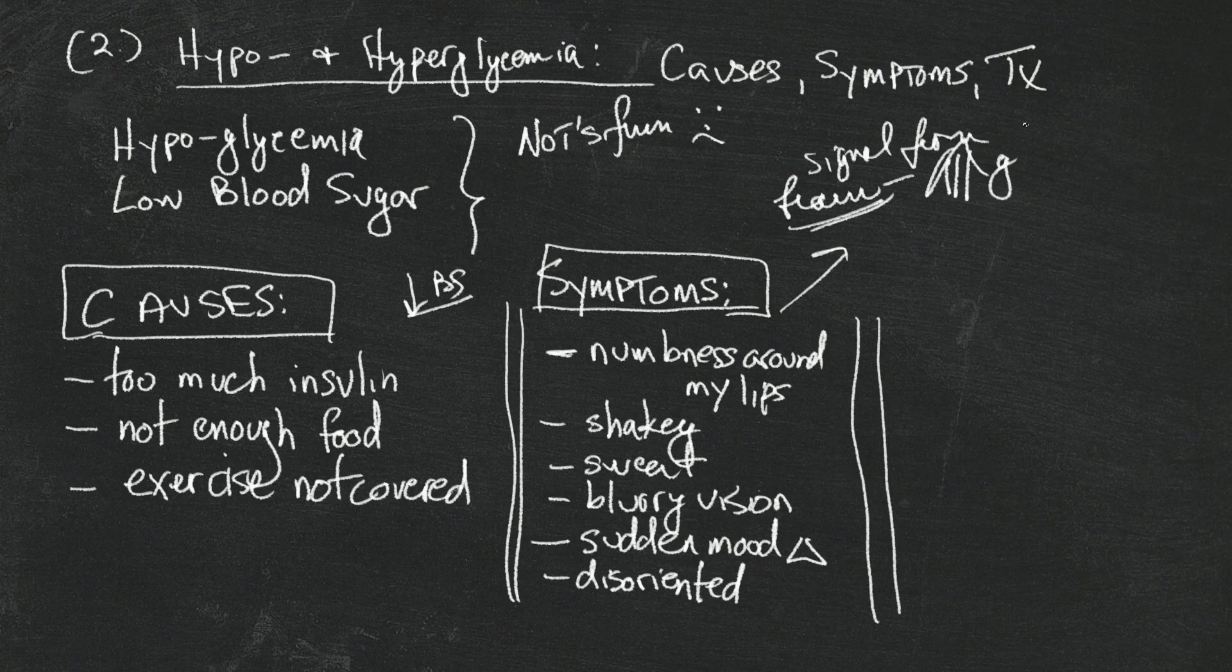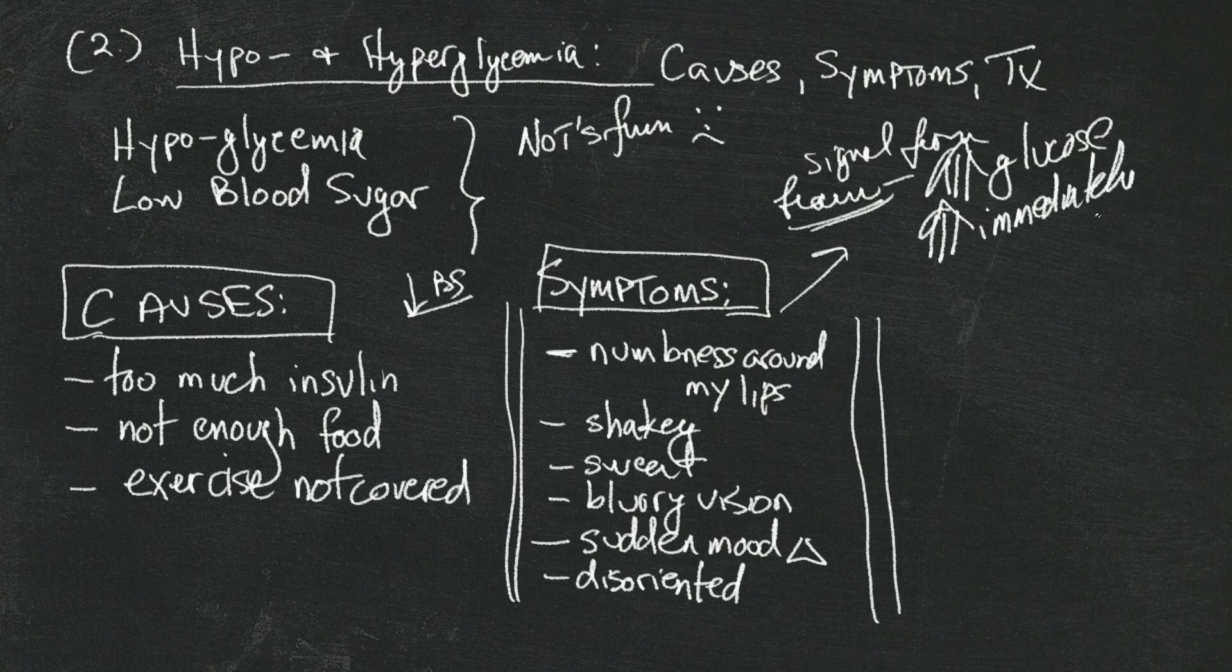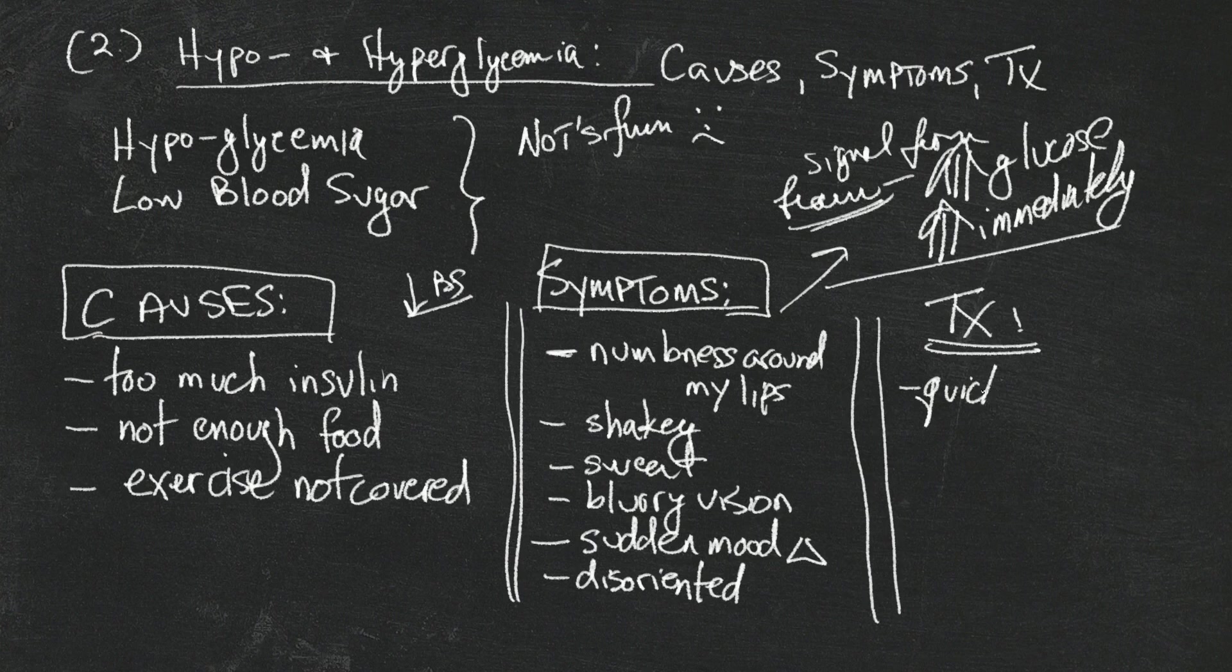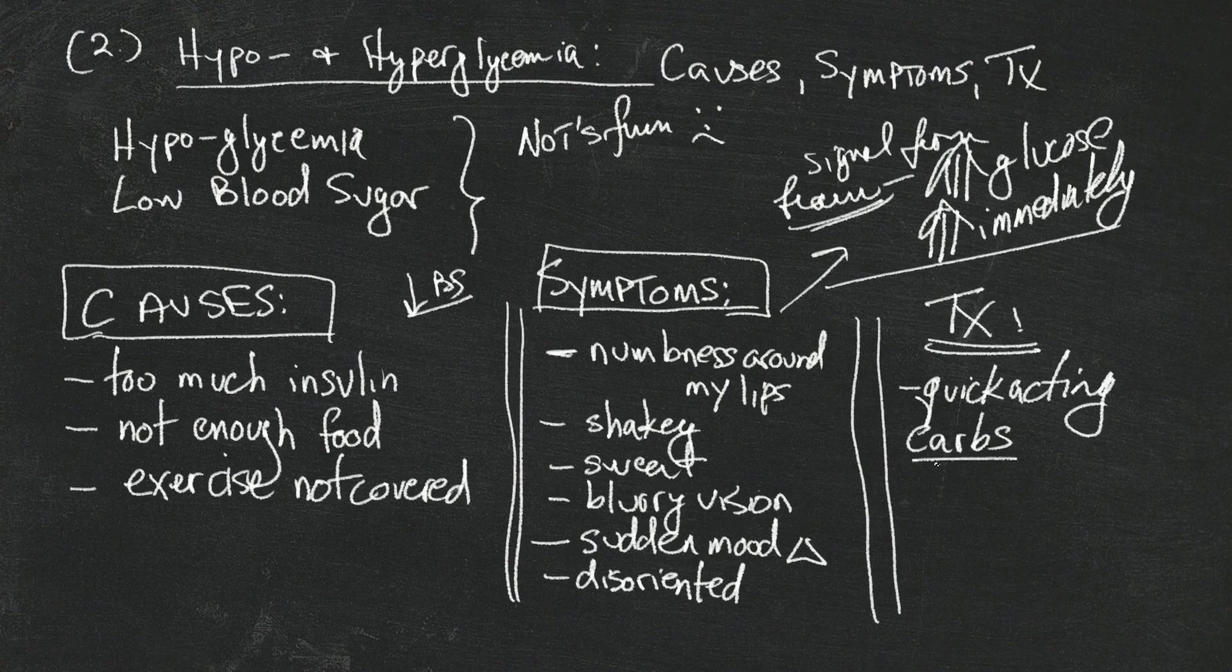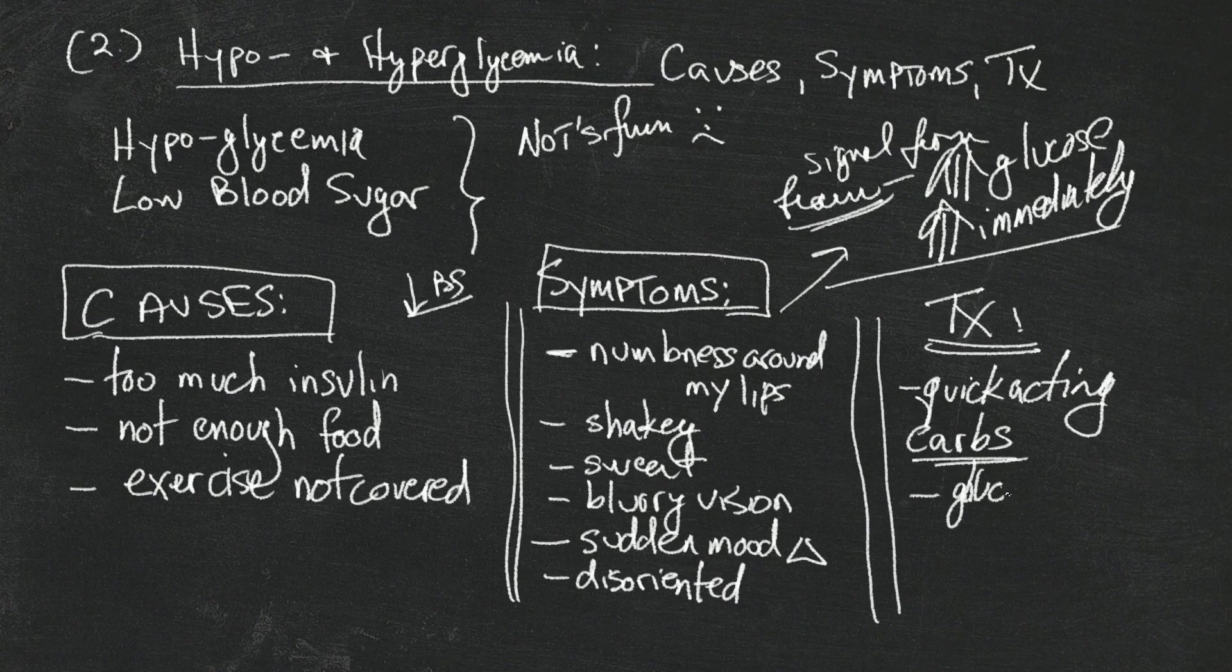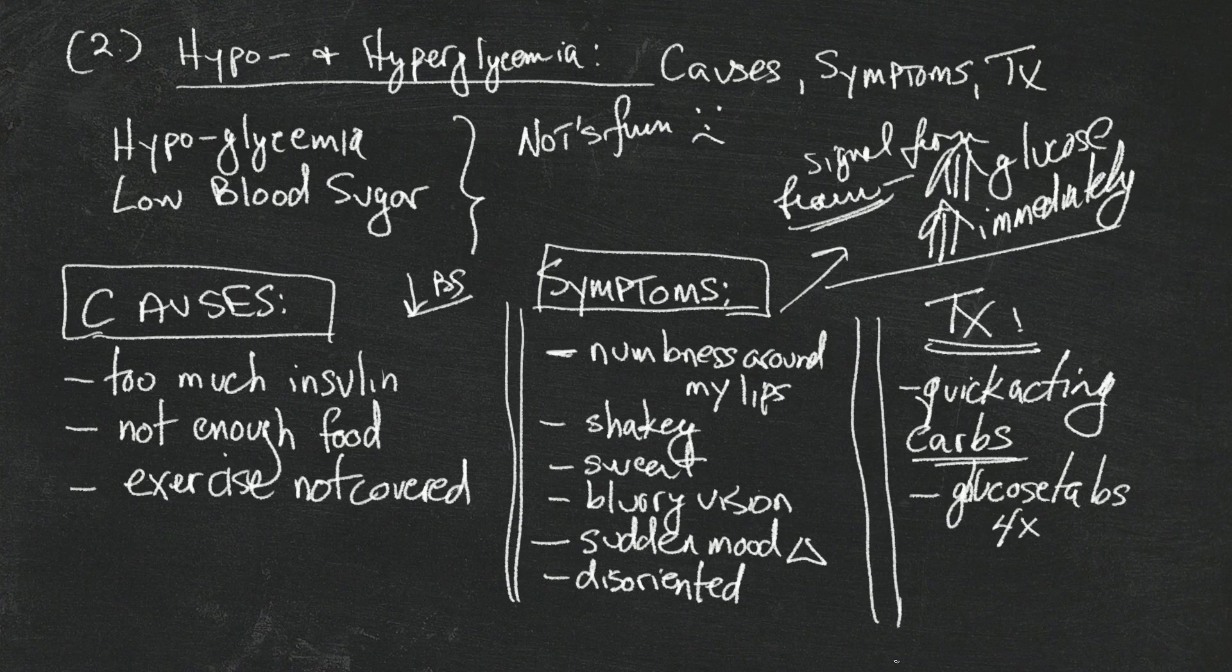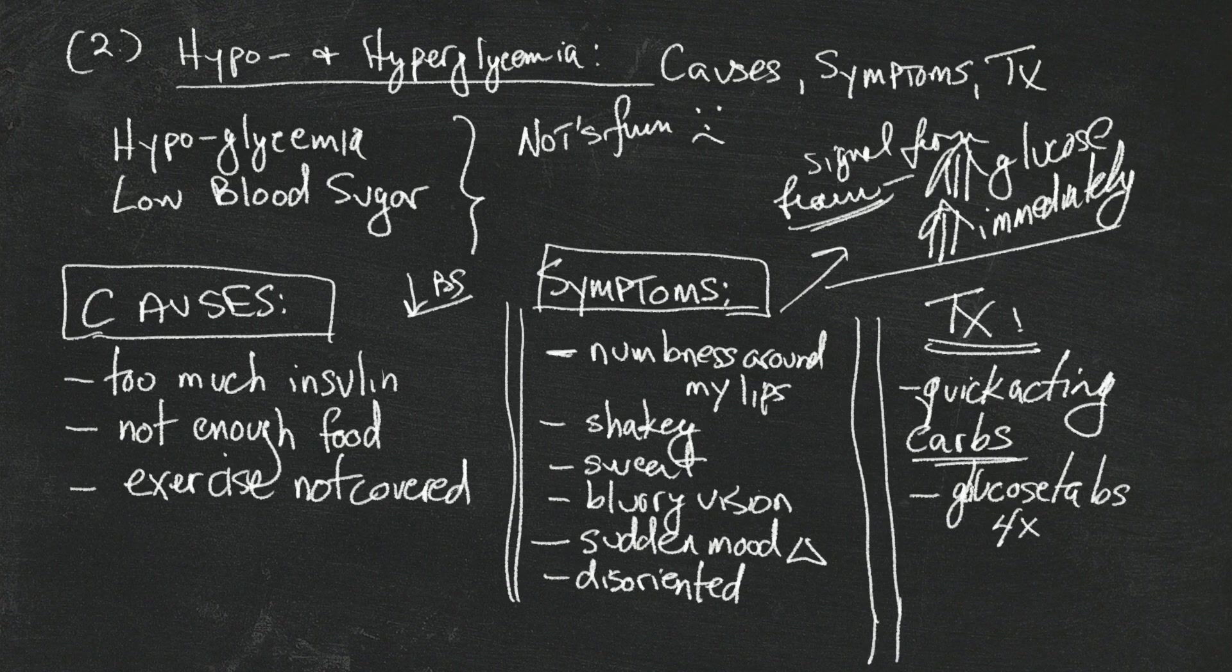What is the treatment for low blood sugars? Quick acting carbohydrates. So glucose tablets - you'll get used to those. They come in various flavors, some good, some bad, but about four of them will work for you. Those work the quickest for me and they're the most effective.